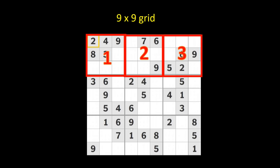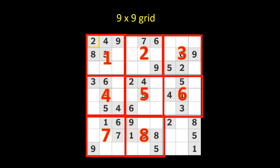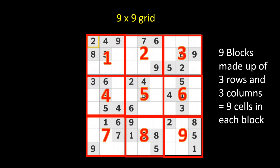One, two, three, four, five, six, seven, eight, nine. Here you can see all nine blocks labeled. Each block is made up of three rows and three columns for a total of nine cells in each block.